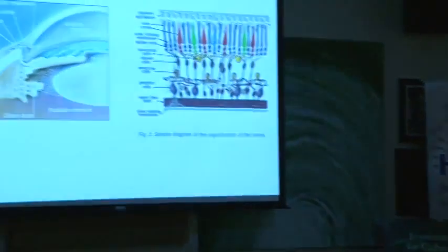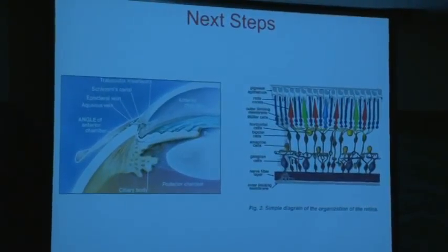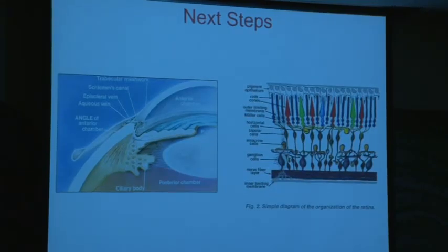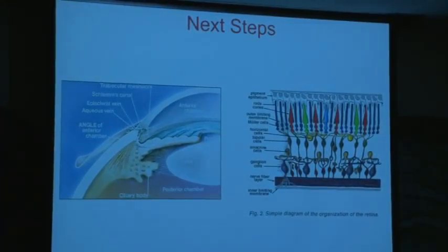We have two next steps. We'd like to confirm that this is involved in aqueous outflow using the anterior segment outflow model, which we are just starting to do — we'll transduce the tissue with lentiviruses. As a parallel hypothesis, we also hypothesize the gene is involved in retinal signaling. An ARVO abstract suggests it's present mostly in the photoreceptors, so we'll start by doing ERG analysis and looking at the retinas to see if there's any degeneration.